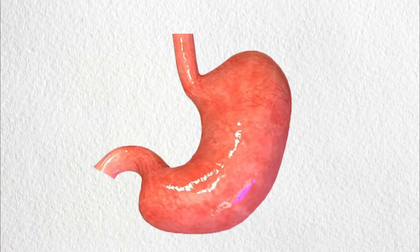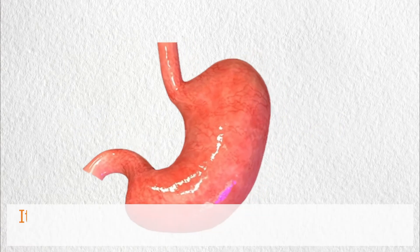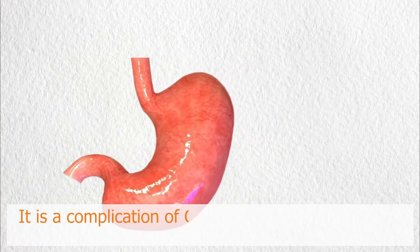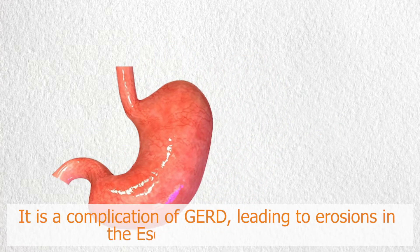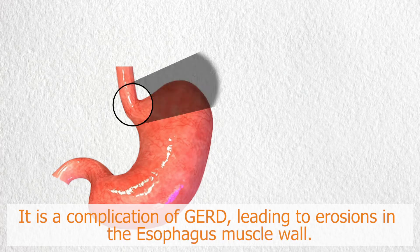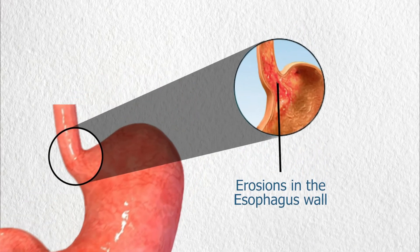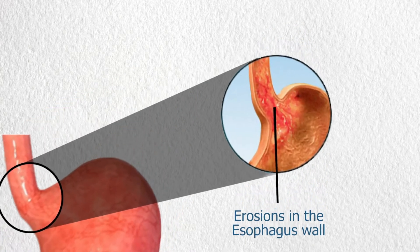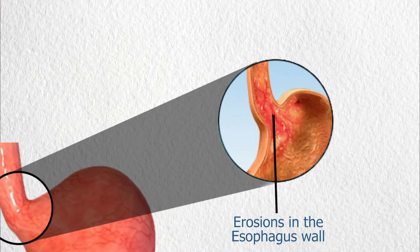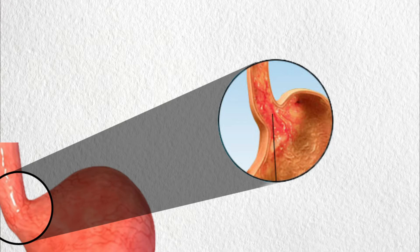Barrett's Esophagus is a complication of GERD, leading to erosion in the esophagus muscle wall. It causes symptoms similar to GERD. However, Barrett's esophagus can sometimes develop into esophageal cancer, so this condition needs to be monitored closely.